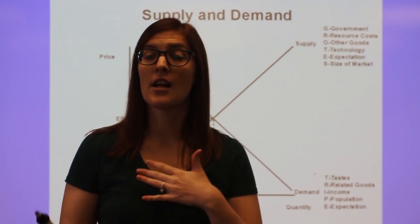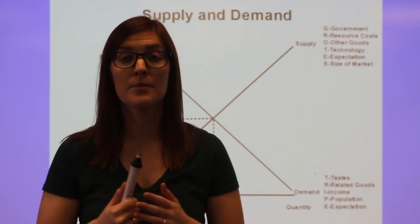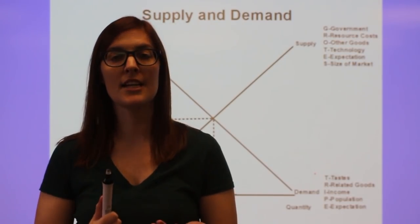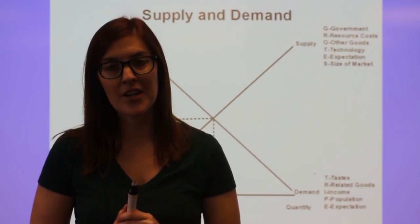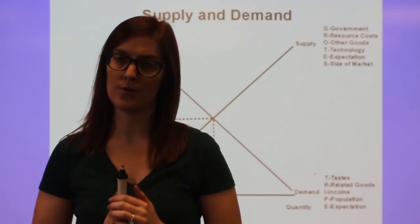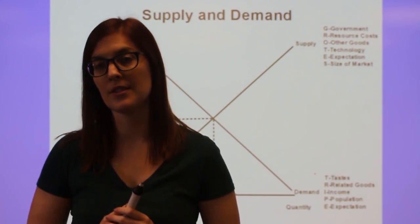O is other good. You sell the good that makes you the most profit. T is technology, technology always helps a producer. E is expectation, again, but from the producer's perspective. And S is size of market. This deals with the number of producers. So if employees get hired, there's more producers making the product, the supply increases.